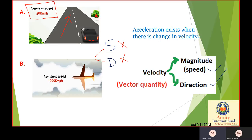Now let's look at the second case. In this case, the flight path is straight and the speed is also constant at 1000 km per hour, so our speed is not changing. In this case, there is no acceleration.